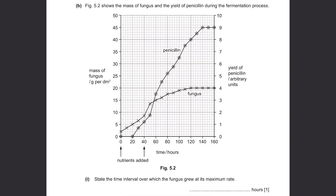Part B. Figure 5.2 shows the mass of fungus and the yields of penicillin during the fermentation process. State the time interval over which the fungus grew at its maximum rate. Looking at the graph, the steepest part of the fungus mass curve represents maximum growth rate. The answer is from 40 to 50 hours.